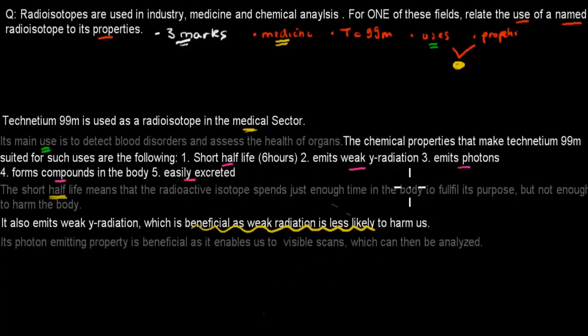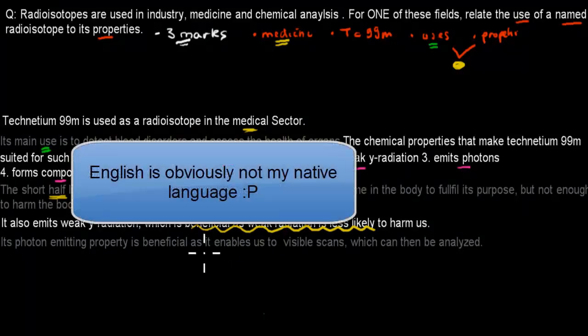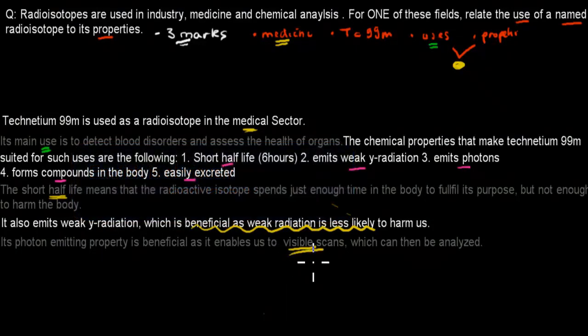Then I went to the third one, which was it emits photons. Its photon-emitting property is beneficial, as it enables us to create visible scans which can be analyzed. That's how its property of emitting photons allows us to make good scans, which are useful for assessing the health of organs.